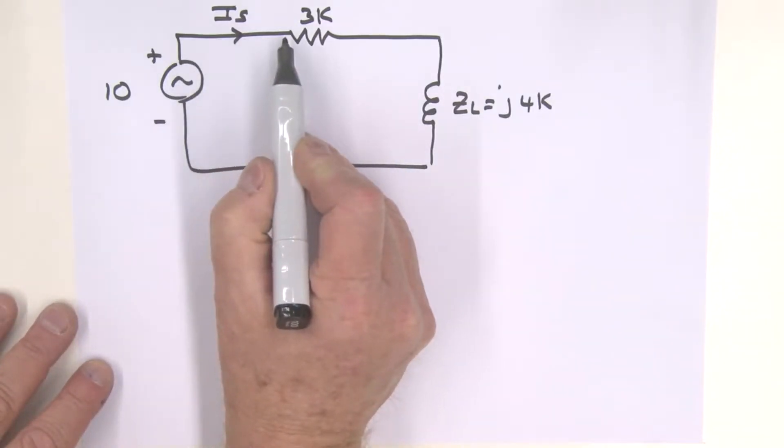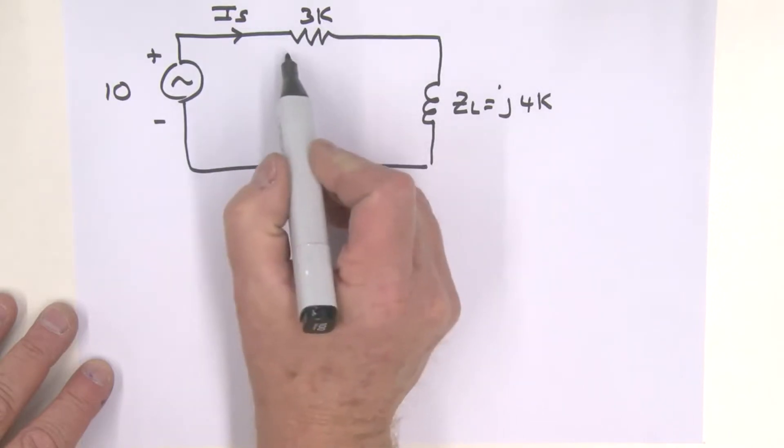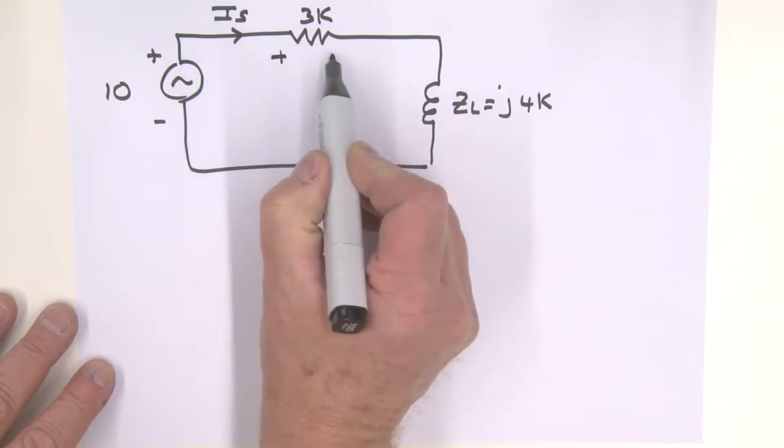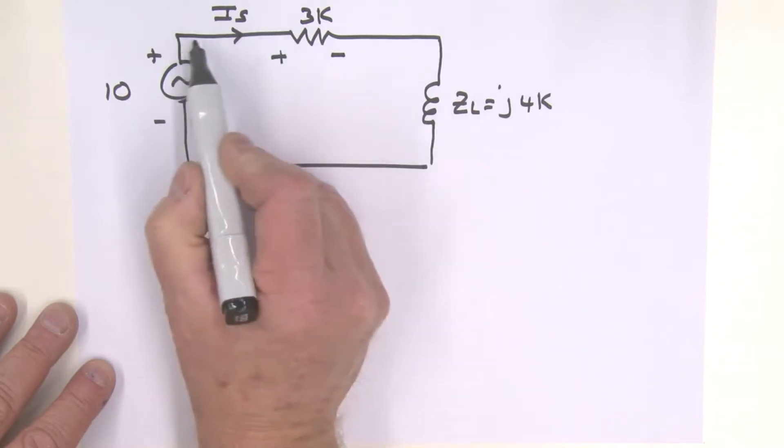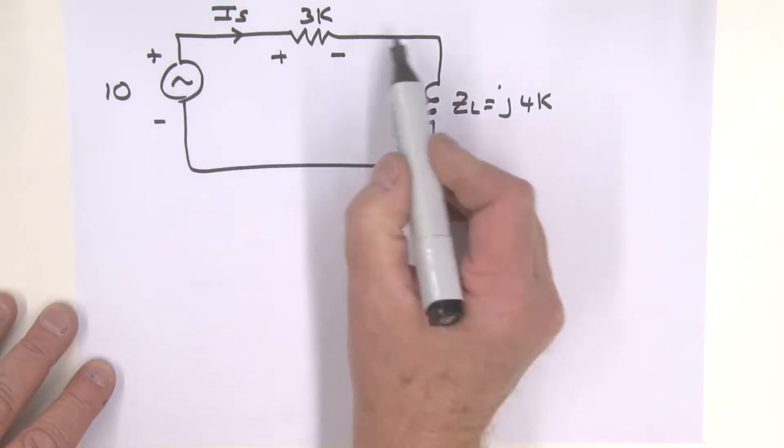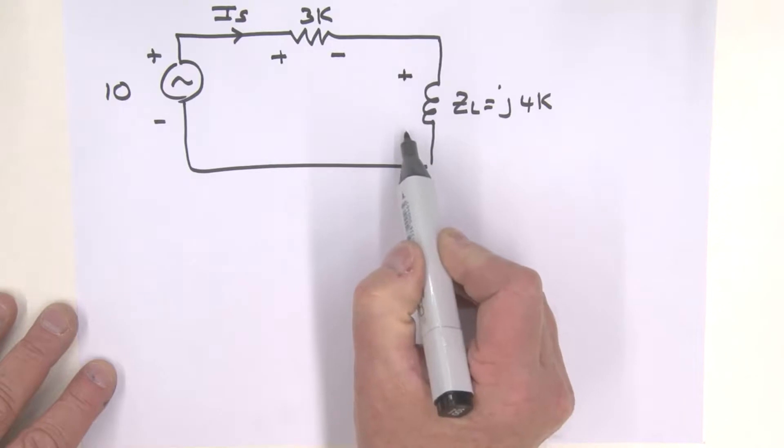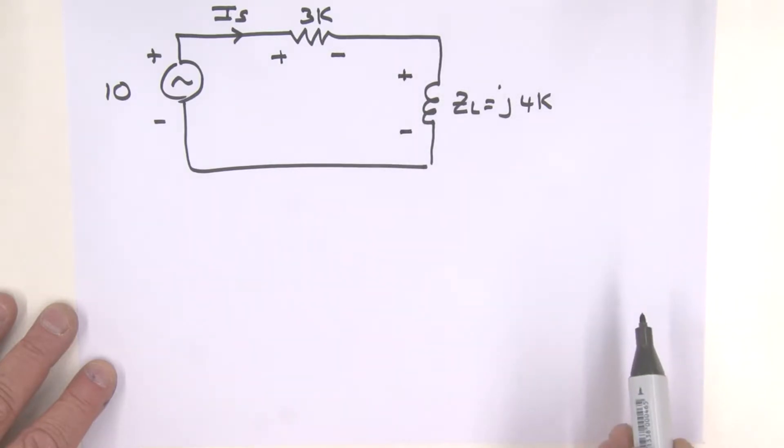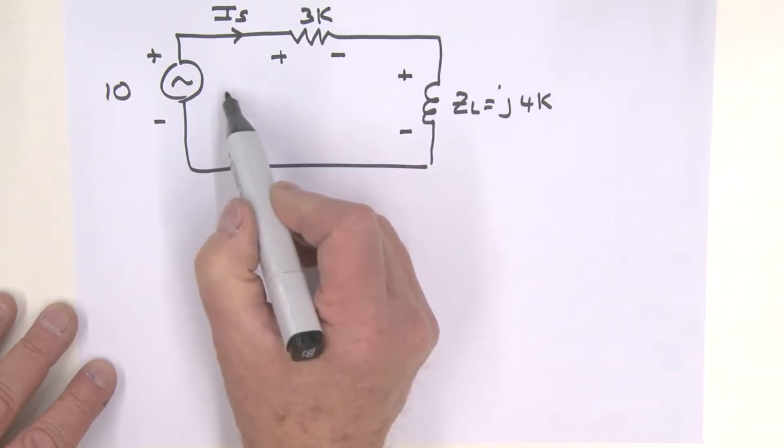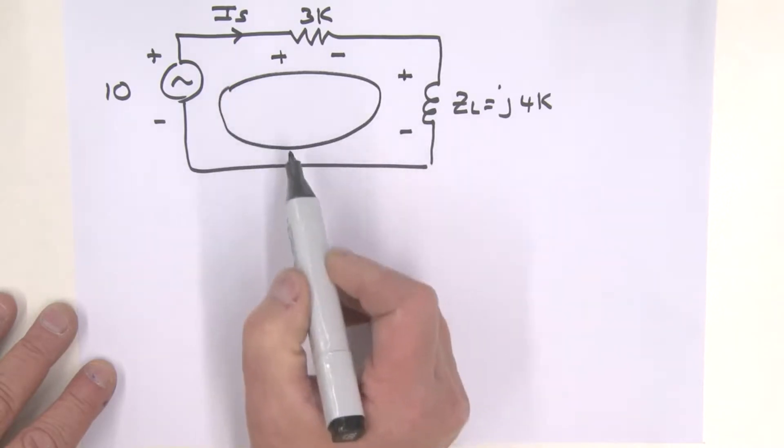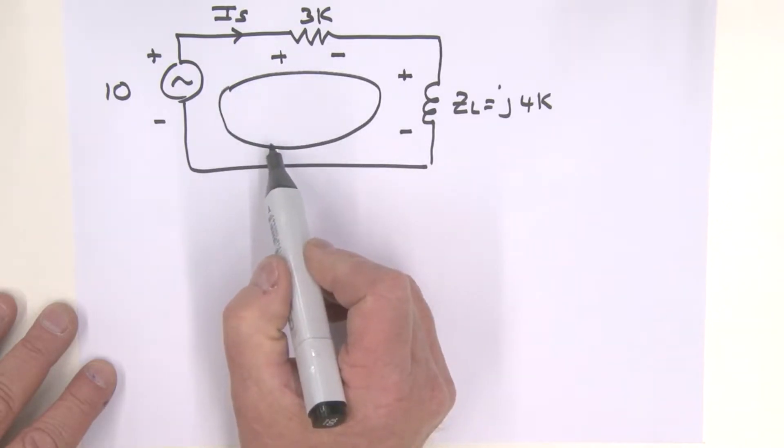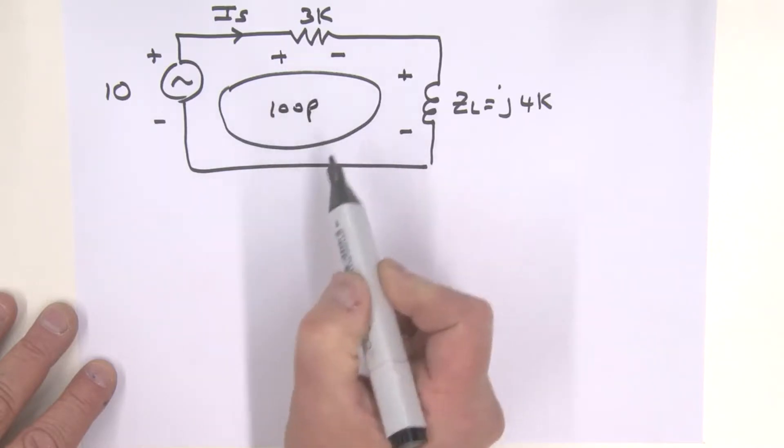IS is defined in this direction, so the polarity across this resistor will be plus minus consistent with that current direction. Now let's look at the inductor. Once again, the current is in this direction, so to be consistent with that current direction we have a polarity across our inductor as plus minus. So what we can do now is we can take a loop and basically sum the voltages around that loop.